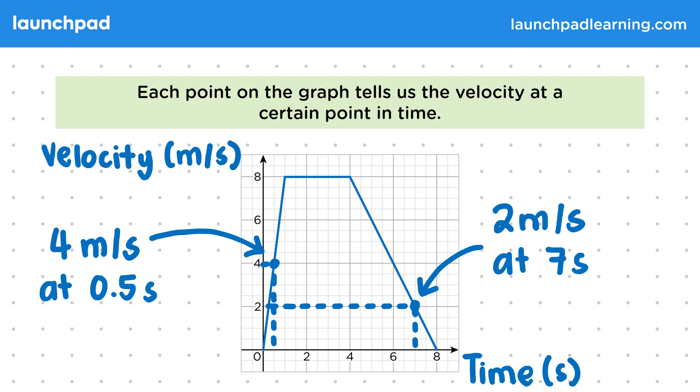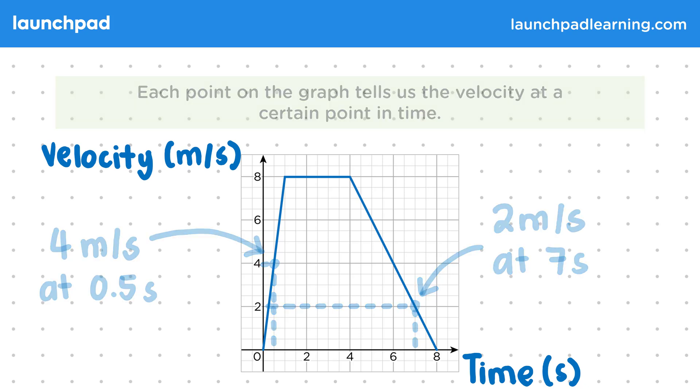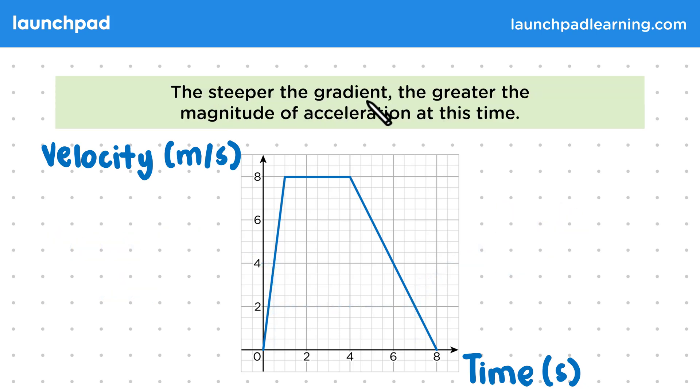Now let's look at what the shape of the graph tells us. The steeper the gradient, the greater the magnitude of acceleration at this time. Remember that acceleration is a measure of how quickly an object's velocity is changing. Acceleration is when the velocity increases and deceleration is when the velocity decreases. The gradient of the graph tells us how quickly the y value is changing when the x value changes. So for a velocity-time graph, the gradient shows us what the object's acceleration is.